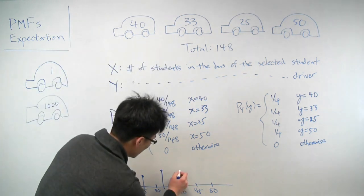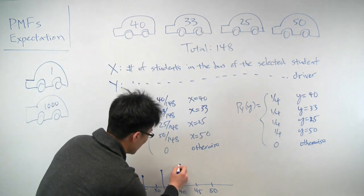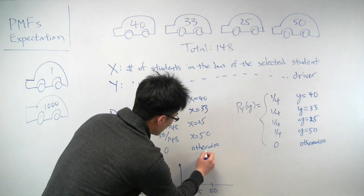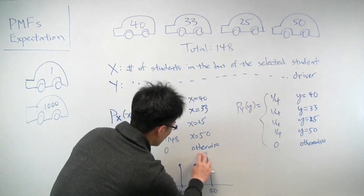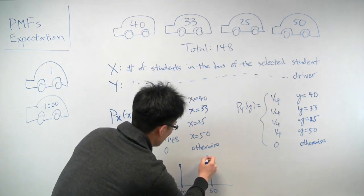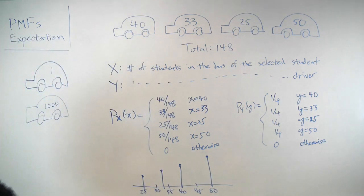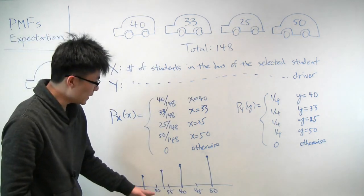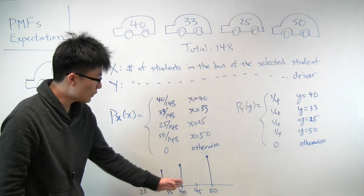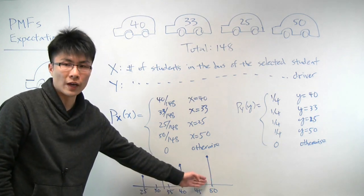For 40, it's even higher still. It's 40 over 148. And for 50, it is still higher, because it is 50 over 148. And so you can see that the PMF is more heavily favored towards the larger values.